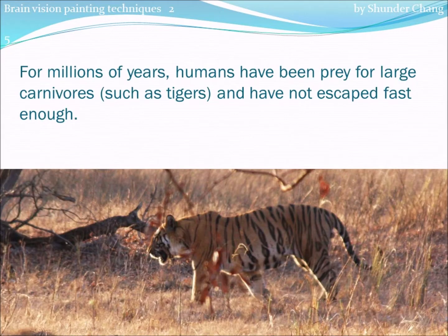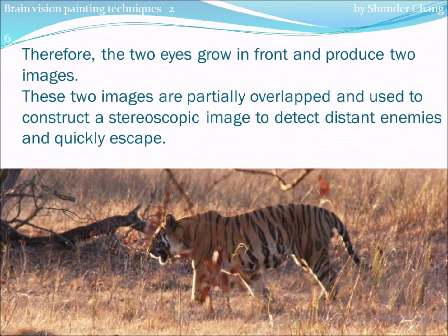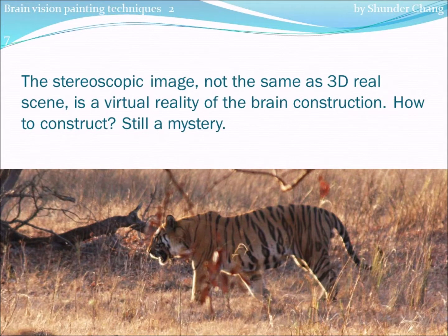For millions of years, humans have been prey for large carnivores such as tigers, and have not escaped fast enough. Therefore, the two eyes grow in front and produce two images. These two images are partially overlapped and used to construct a stereoscopic image to detect distant enemies and quickly escape. The stereoscopic image, not the same as a 3D real scene, is a virtual reality of the brain's construction.